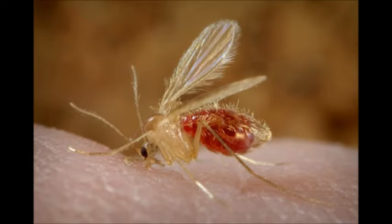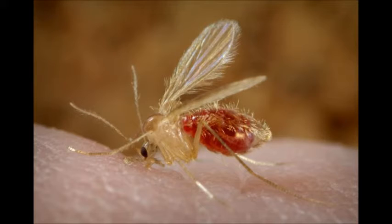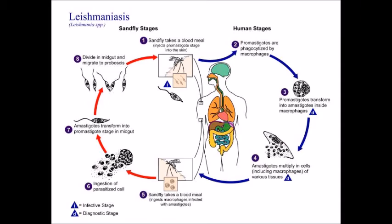So, leishmaniasis is a parasitic infection caused by a single-cell parasite. Most of the cases in Syria and Iraq are from a parasite known as Leishmania tropica, and they're transmitted by sandflies. When you get bitten by a sandfly, the sandfly inoculates the parasite. In fact, the salivary glands of the sandfly actually immunomodulate the host to make it easier for you to become infected with the parasite. It's an interesting relationship that has evolved.